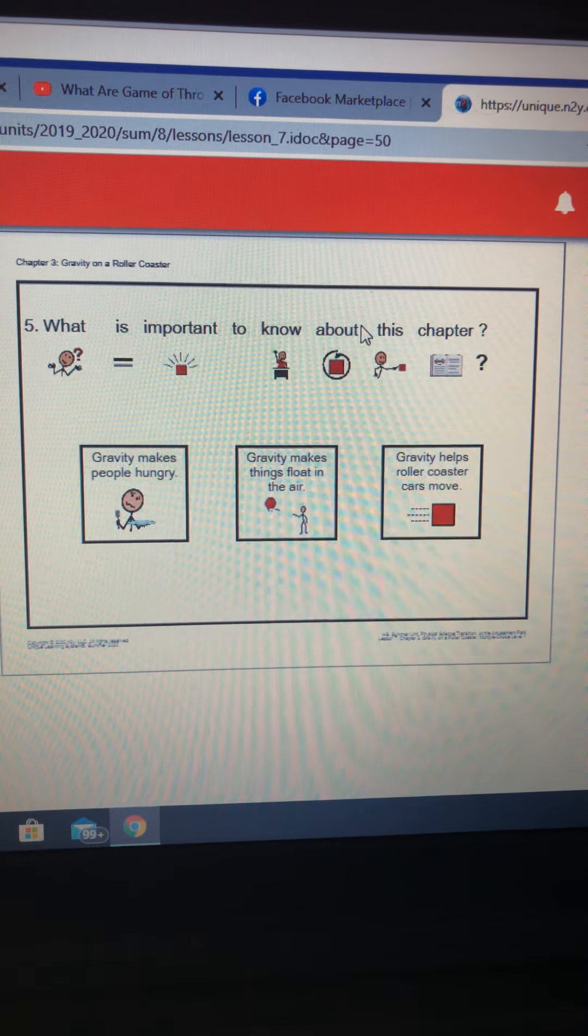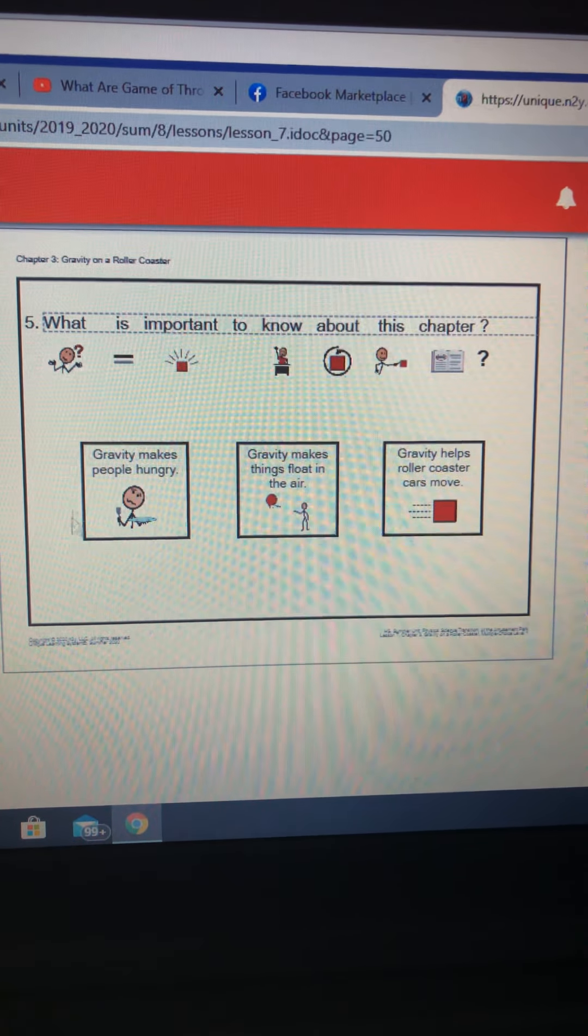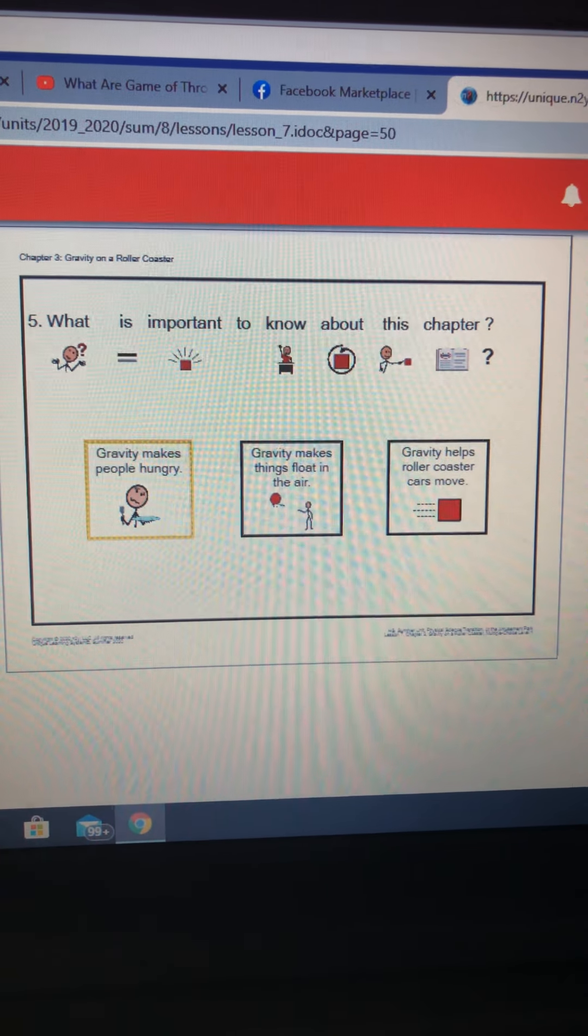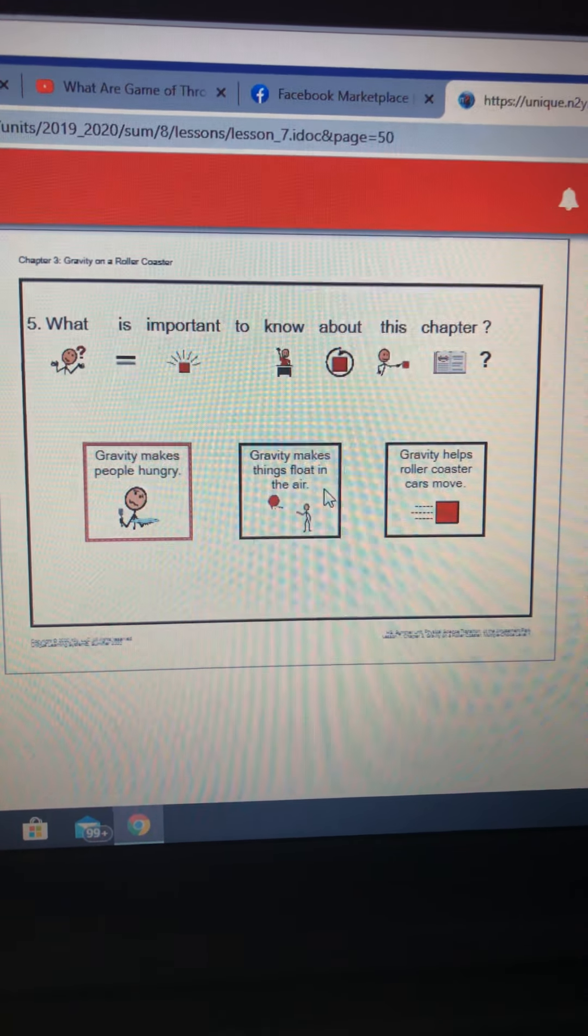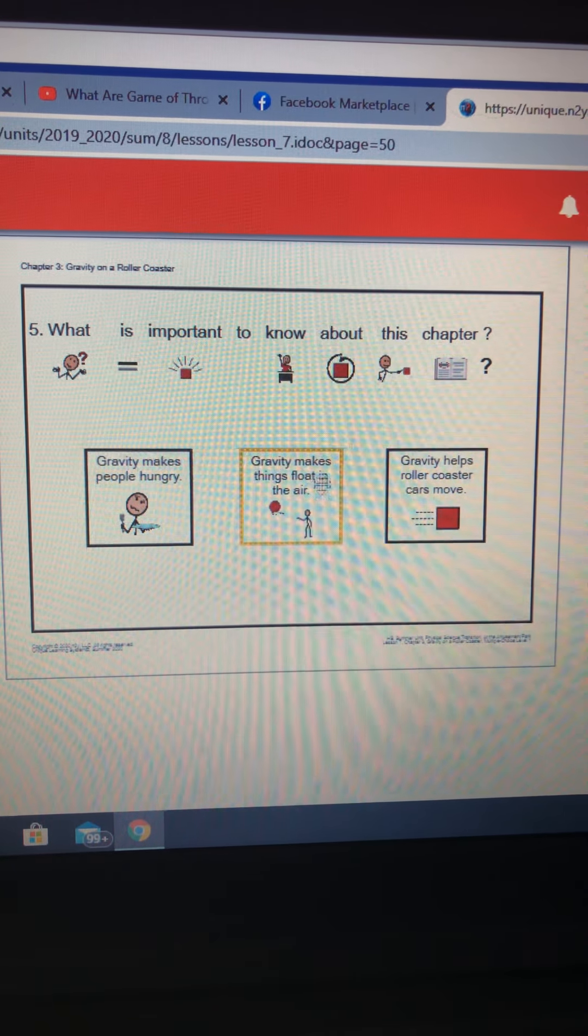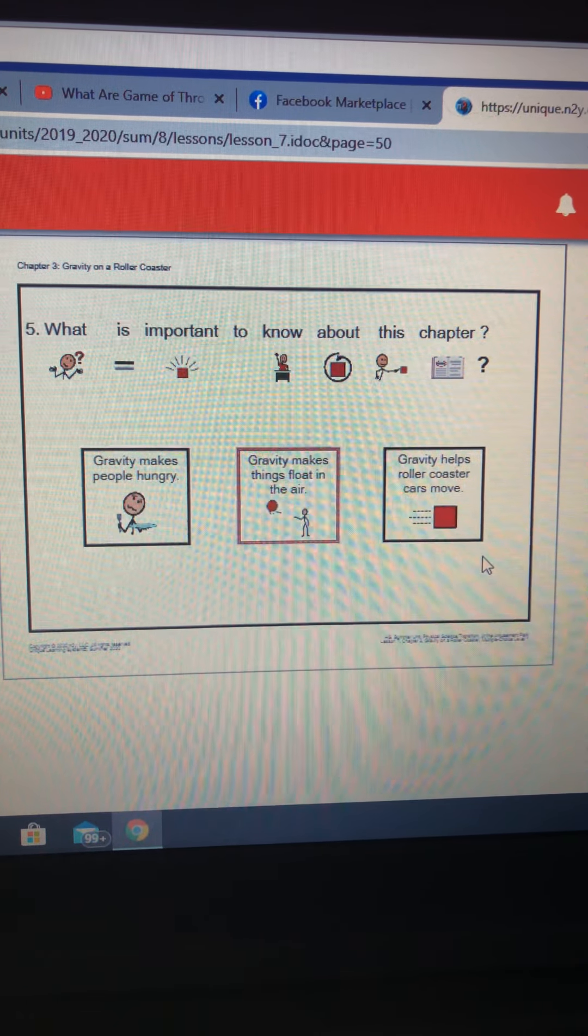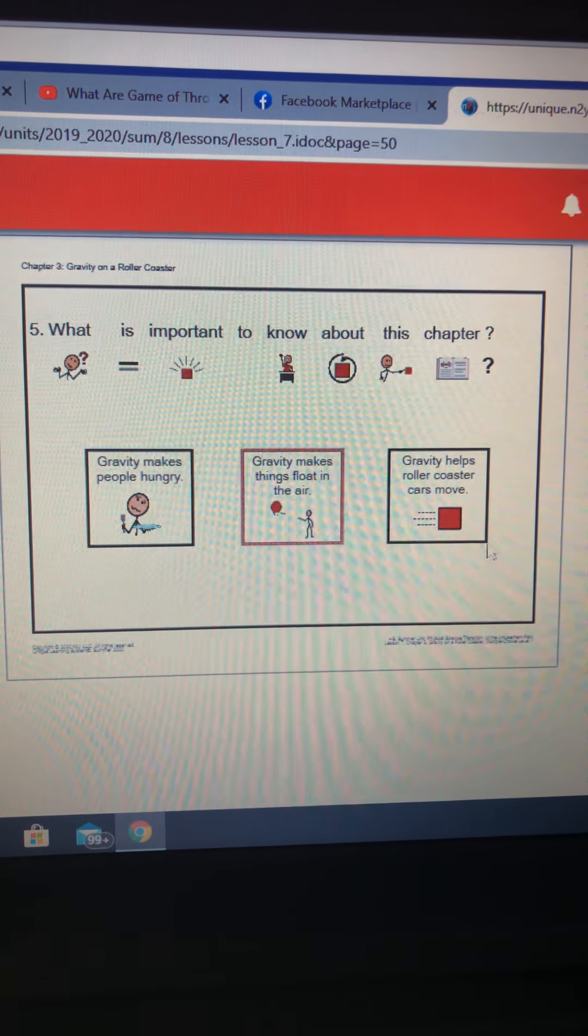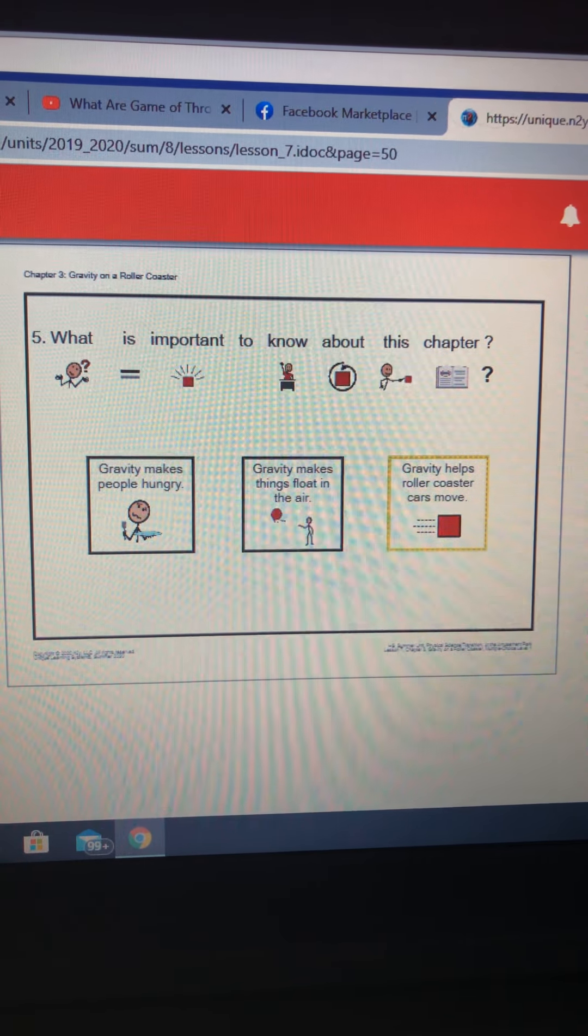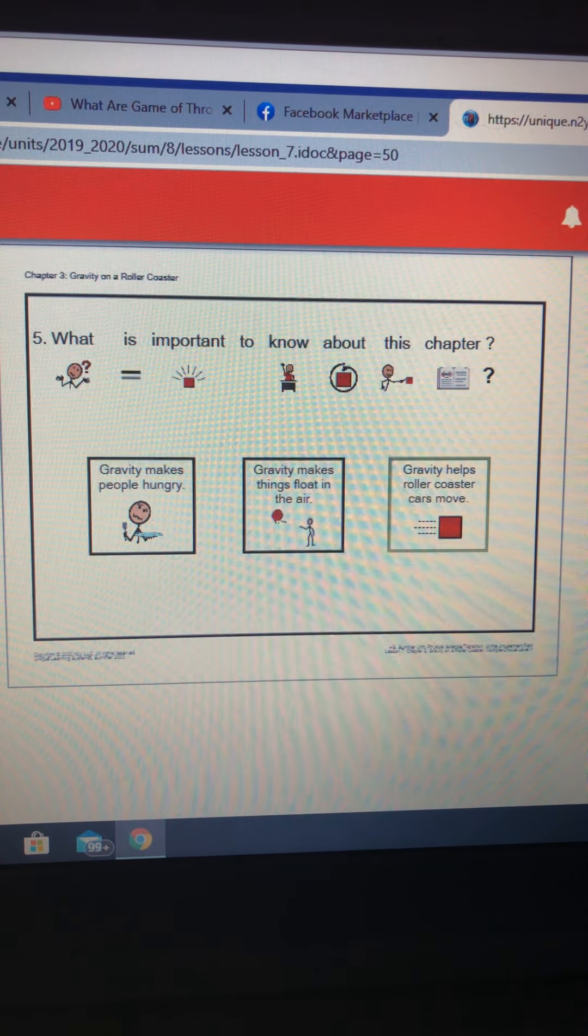Last question. What is important to know about this chapter? Gravity helps roller coaster cars move. Gravity makes people hungry. Not the right answer. Gravity makes things float in the air. Not correct. Gravity helps roller coaster cars move. What is important to know about this chapter? Gravity helps roller coaster cars move.